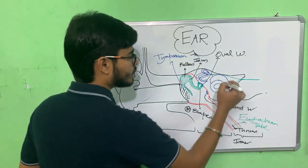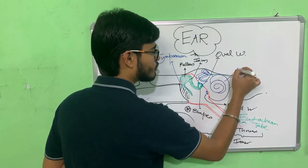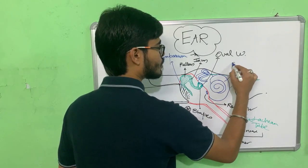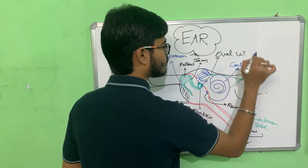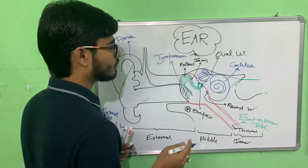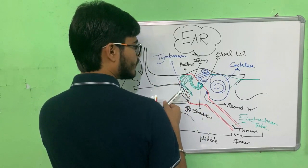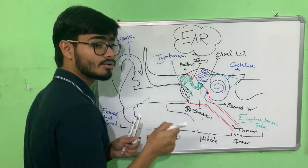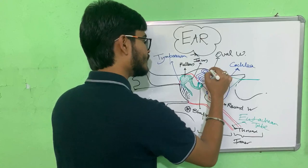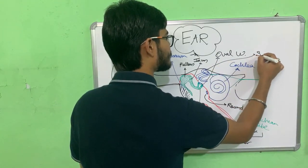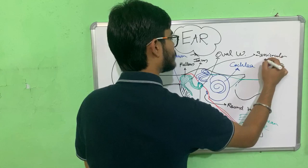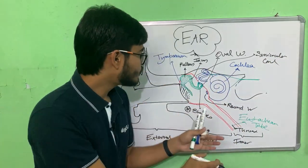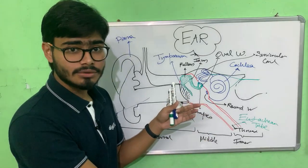In the inner ear, we have a coiled, snail-like structure called the cochlea. Above the cochlea and connected to it are three semicircular-shaped canals known as the semicircular canals.